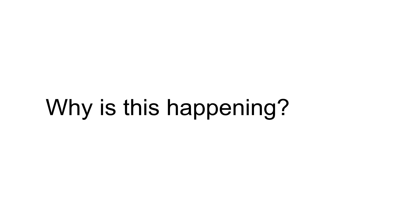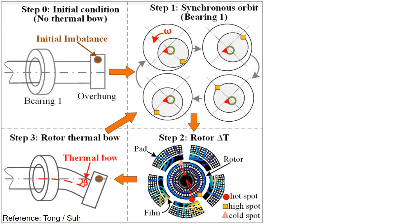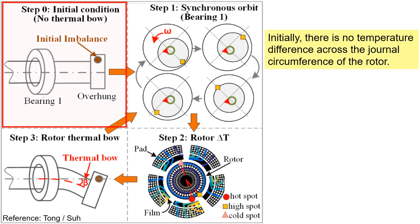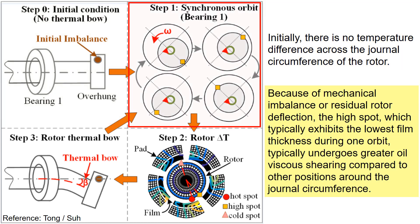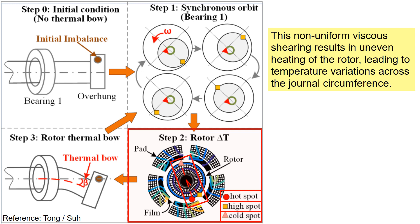So why is this happening? Let's look into this schematic. Initially, there's no temperature difference across the journal circumference of the rotor. Because of mechanical imbalance or residual rotor deflection, the high spot — which typically exhibits the lowest film thickness during one orbit — typically undergoes greater oil viscosity shearing compared to other positions around the journal circumference. This non-uniform viscous shearing results in uneven heating of the rotor, leading to temperature variations across the journal circumference.